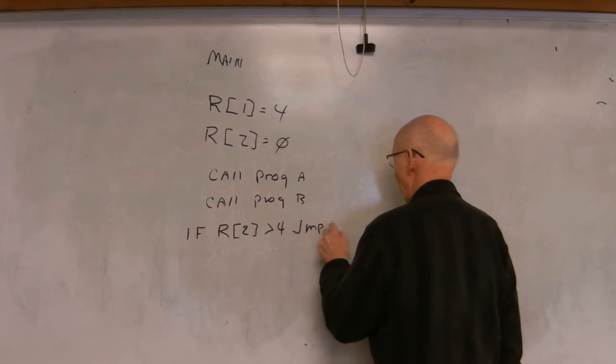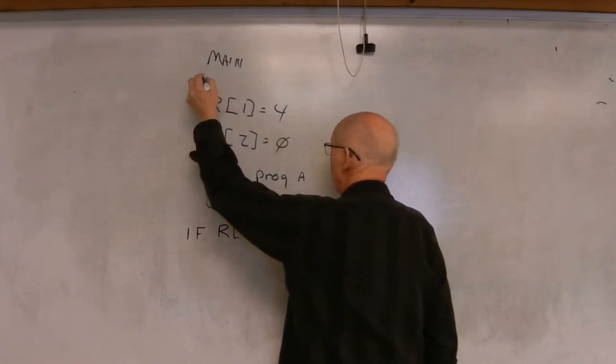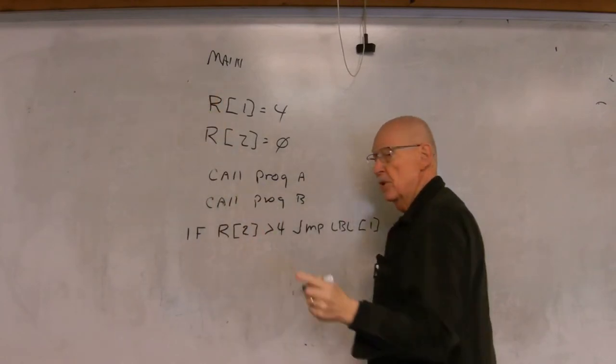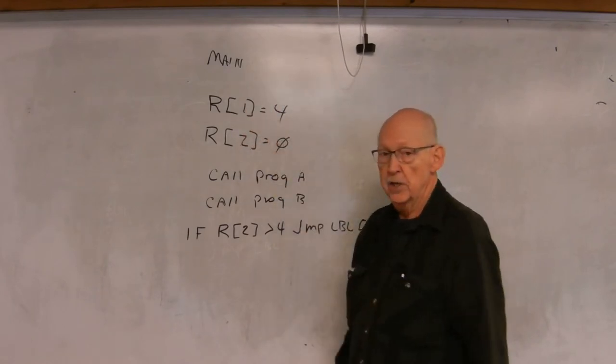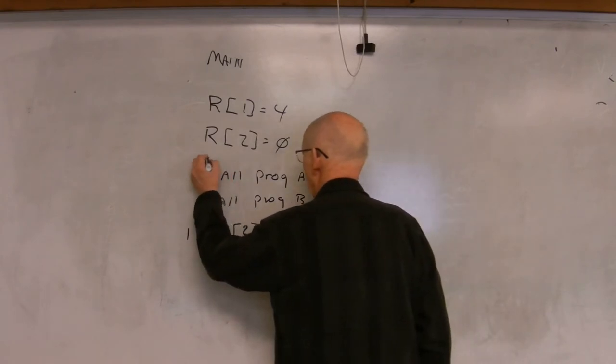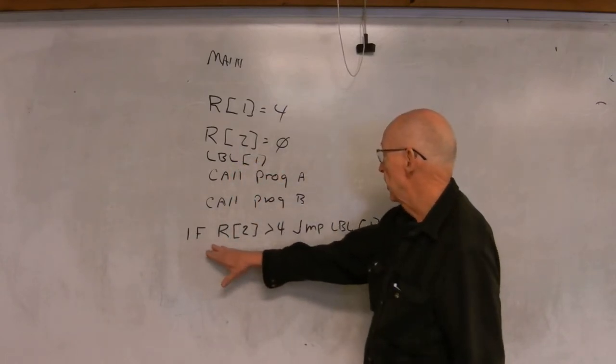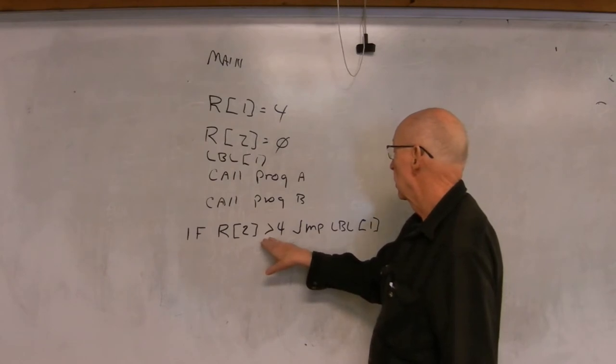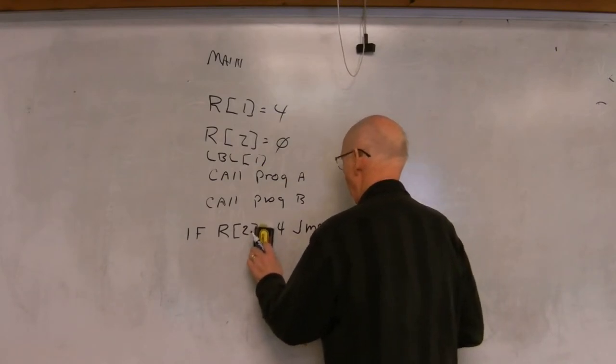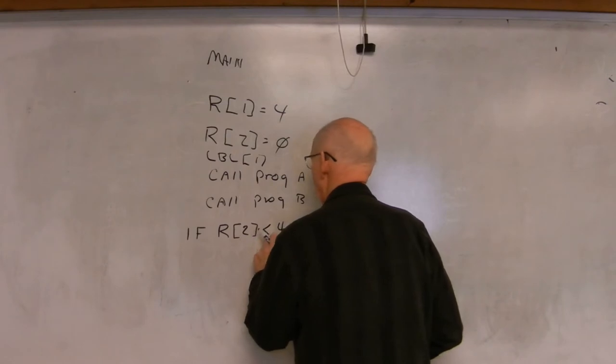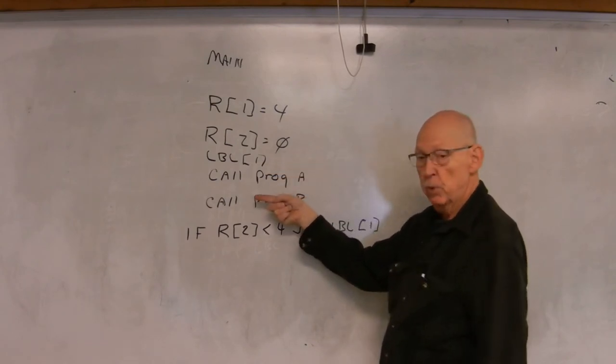We'll just go with label one, but now we have to decide where to put the label. Because if we put the label up here, the registers are going to be reinitialized to these values, so we want to set it in here. So if this condition is... got this backwards. Test register two, and if it's less than four, then go back to label one and call these programs again.